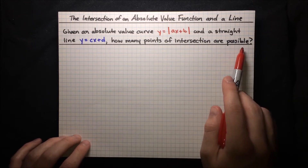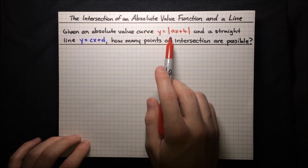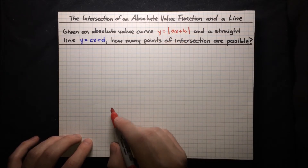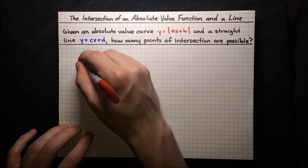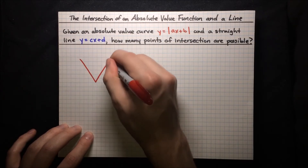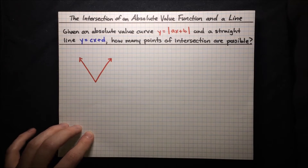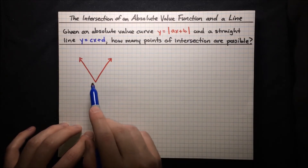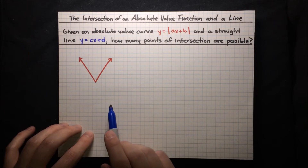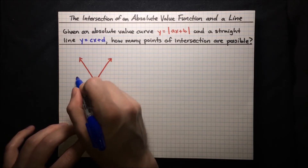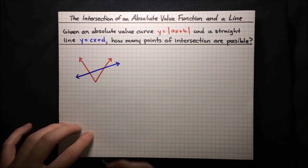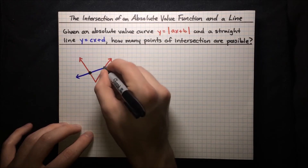Think about what an absolute value curve looks like — any absolute value curve of this form looks like a V-shape. Now let's think about all the configurations in which a straight line may or may not intersect this V-shape. Maybe the straight line cuts right across the V like this. In this case, we have two points of intersection.